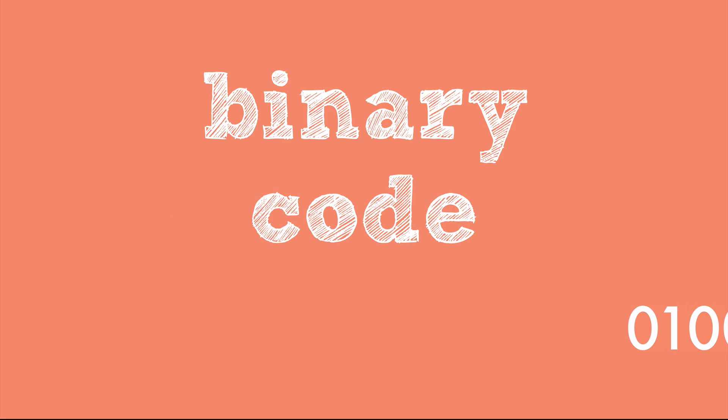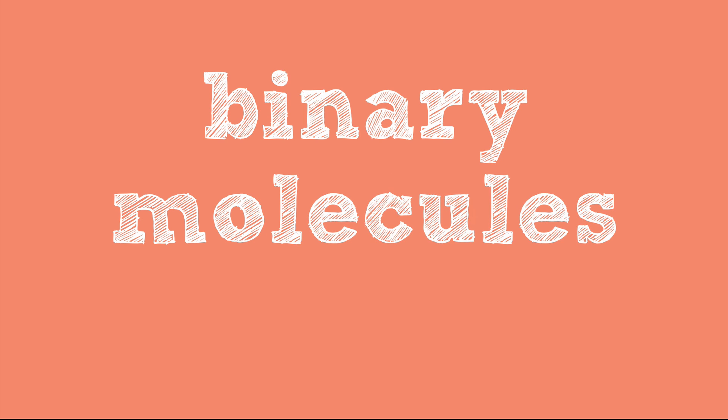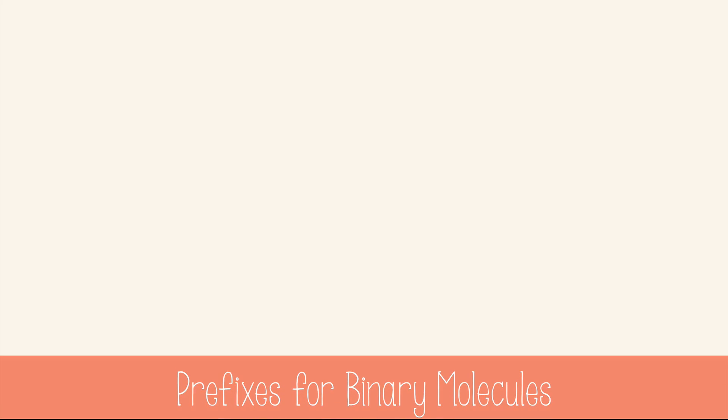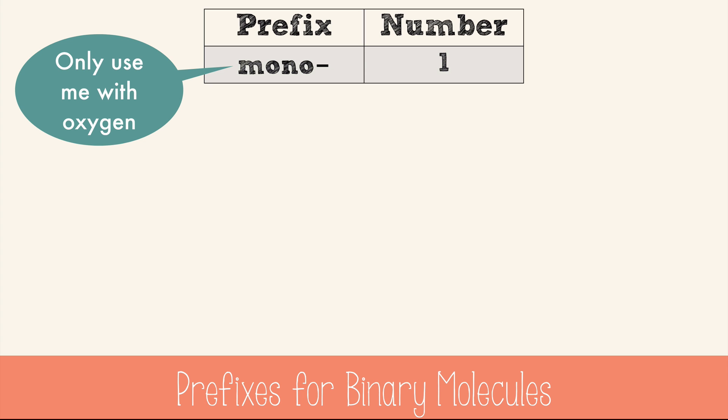Binary means two. If you know anything about binary code, you know that it uses only two numbers: zero and one. Binary molecules are molecules with just two elements. Then we use prefixes to show how many of each atom there are. I'll show you the prefix and the number it represents up to eight. Prefixes are used at the front of words when you name molecules. Mono means one, but it's really only used with oxygen.